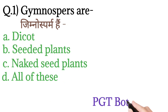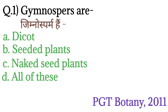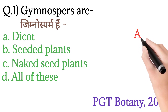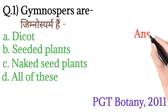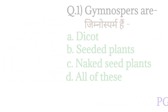This question is from PGT Botany 2011. The answer will be option D — All of these. Gymnosperms are dicot, seeded, and naked seed plants.